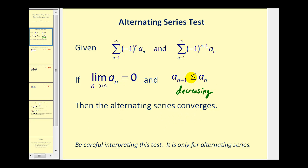So if these two conditions are met for an alternating series, the series converges. Now I do have to be careful about interpreting this test — it is only for alternating series, and we cannot apply it to non-alternating series.